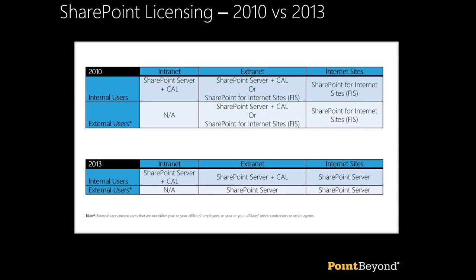The other big change is that you no longer require SharePoint for Internet Sites licences to allow external users to access SharePoint. With 2010, if you had external users accessing an extranet, you had to buy a client access licence for every external user or buy a SharePoint for Internet Sites licence, which was quite expensive. That's all gone with 2013 — all you now require is the SharePoint server licence.